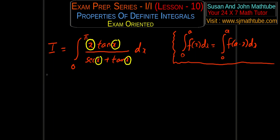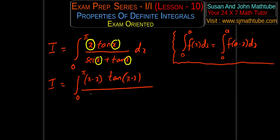What I do is write the same limits and replace x with a minus x — so we get (π minus x)·tan(π minus x) divided by sec(π minus x) plus tan(π minus x). I'll call the above one equation number 1. We need to simplify first, then we can call it equation number 2.